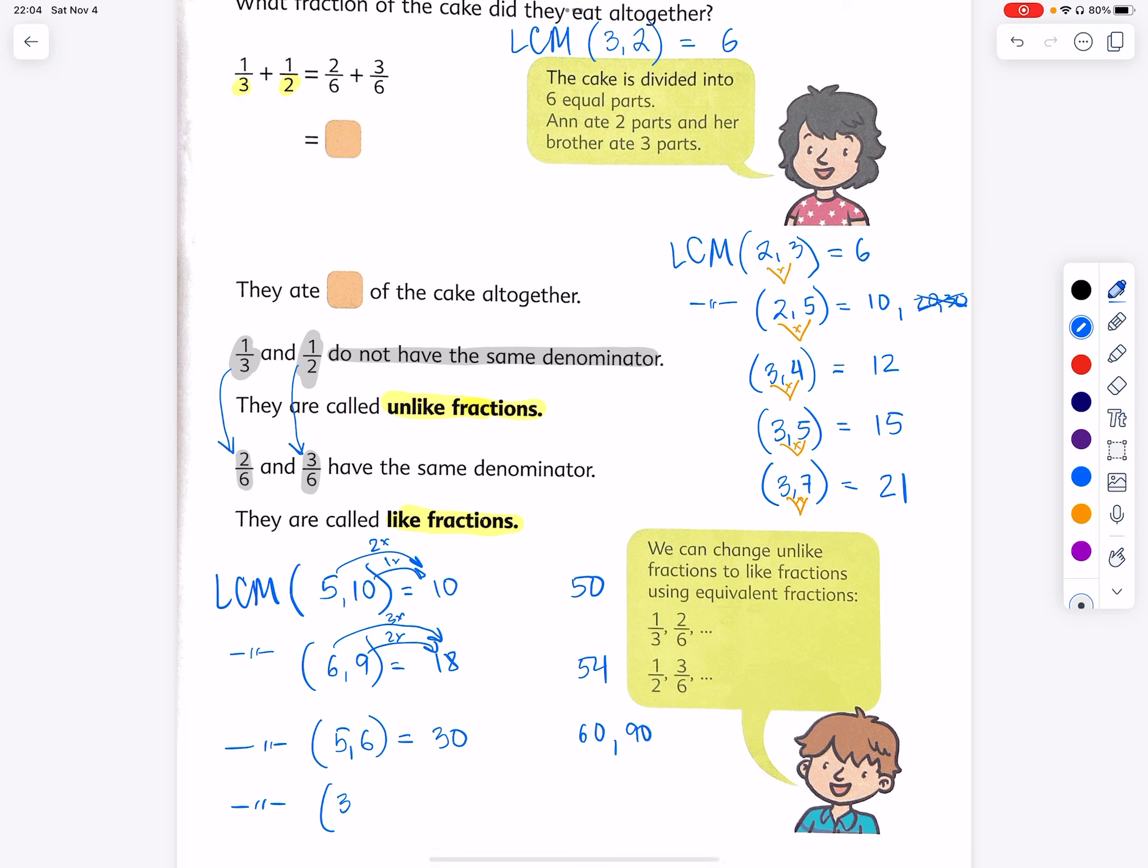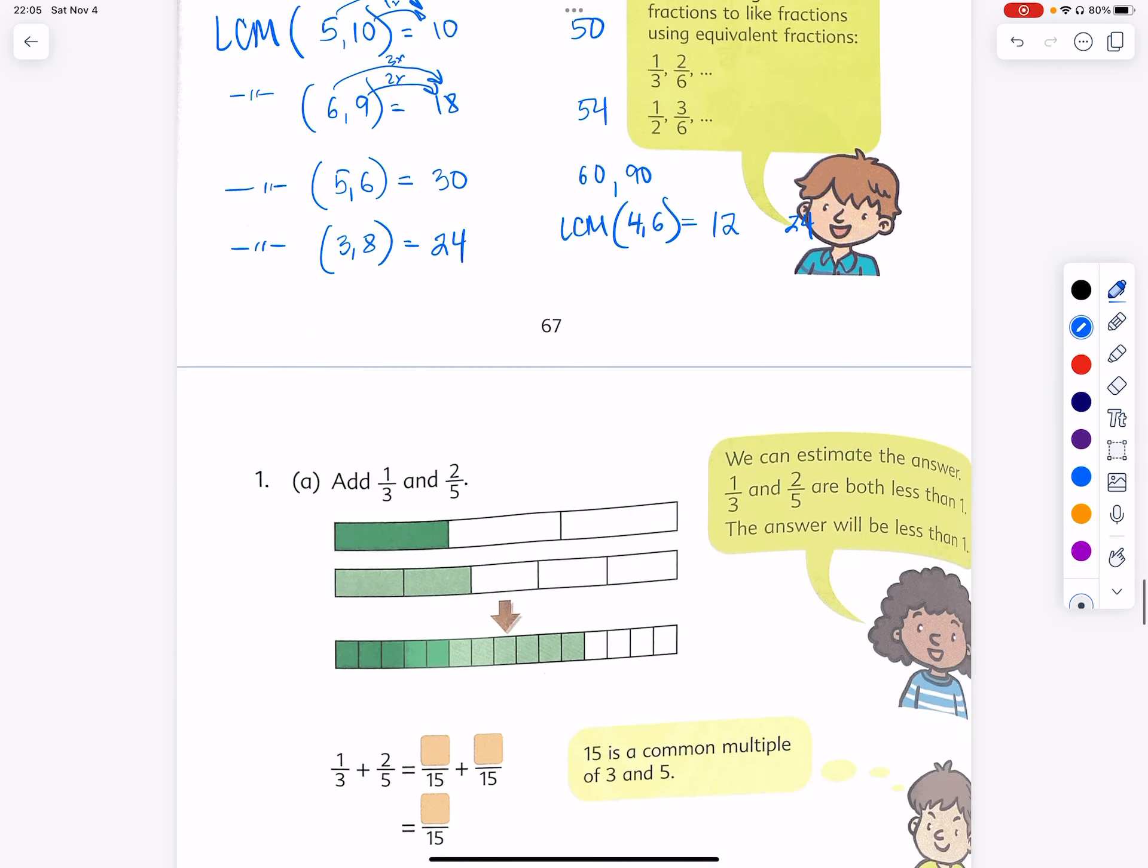LCM of 4 and 6 - you might say it's 24. It is true, 24 is a multiple, but 12 is the least common multiple. So what do we do? 1/3, in order for it to become 2/6, we double it. And 1/2, in order for it to become an equivalent 3/6, we triple it.